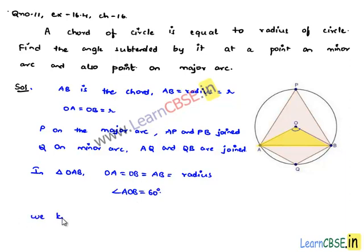We know that the angle subtended by the chord at the center will be double the angle subtended by the chord in its minor arc. Therefore, here, angle AOB is equal to 2 times angle APB, which equals 60 degrees, so angle APB equals 30 degrees. Therefore, the angle subtended by the chord in the major segment is 30 degrees.